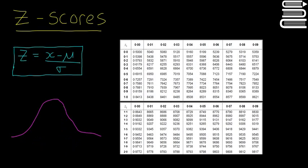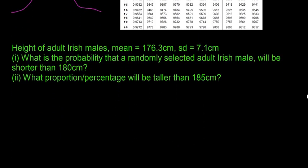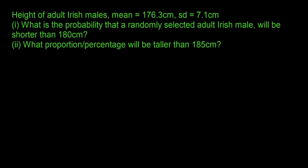We're going to look at an example question that will teach us how to use the standard normal tables, using the same numbers as last time. The height of adult Irish males has a mean of 176.3 centimetres and a standard deviation of 7.1 centimetres. What is the probability that a randomly selected adult Irish male will be shorter than 180 centimetres? And also, what proportion will be taller than 185 centimetres?